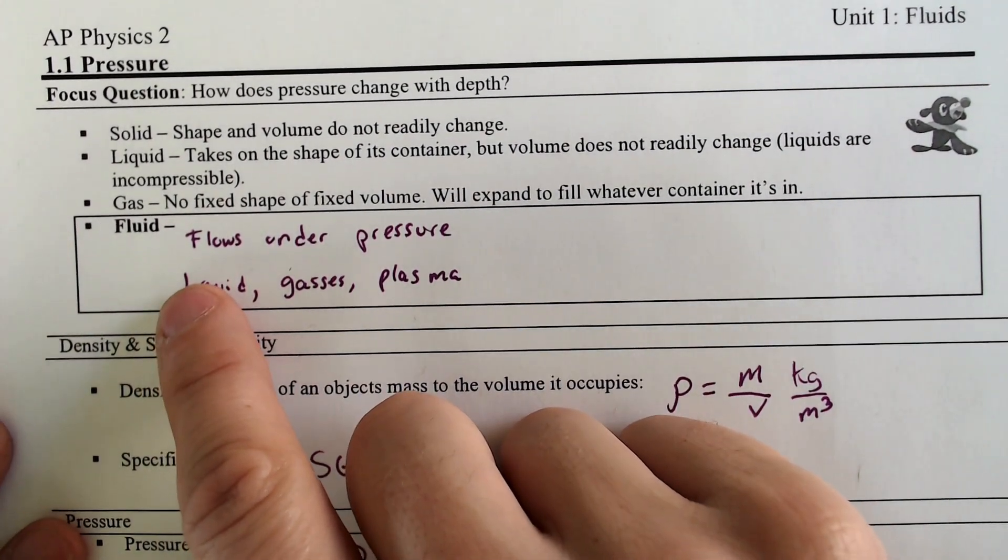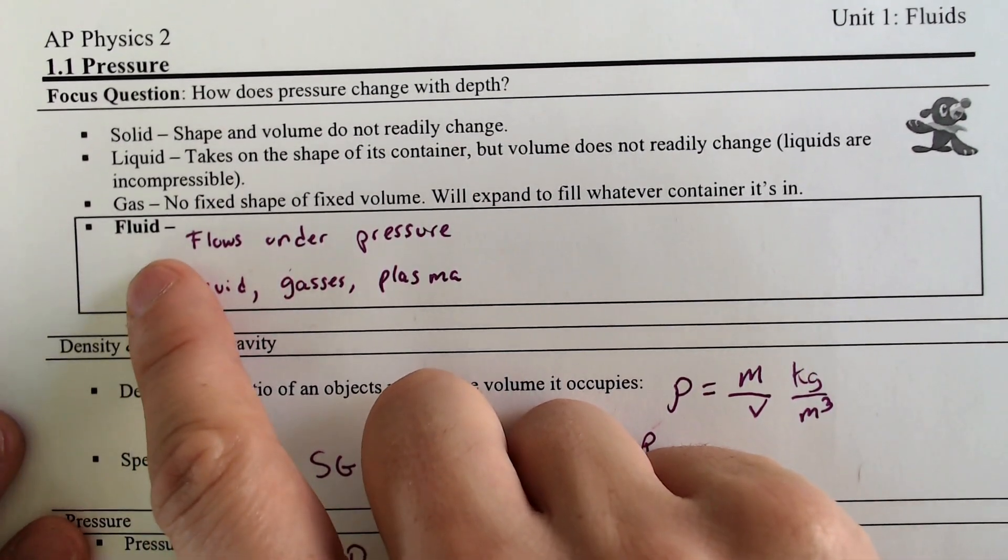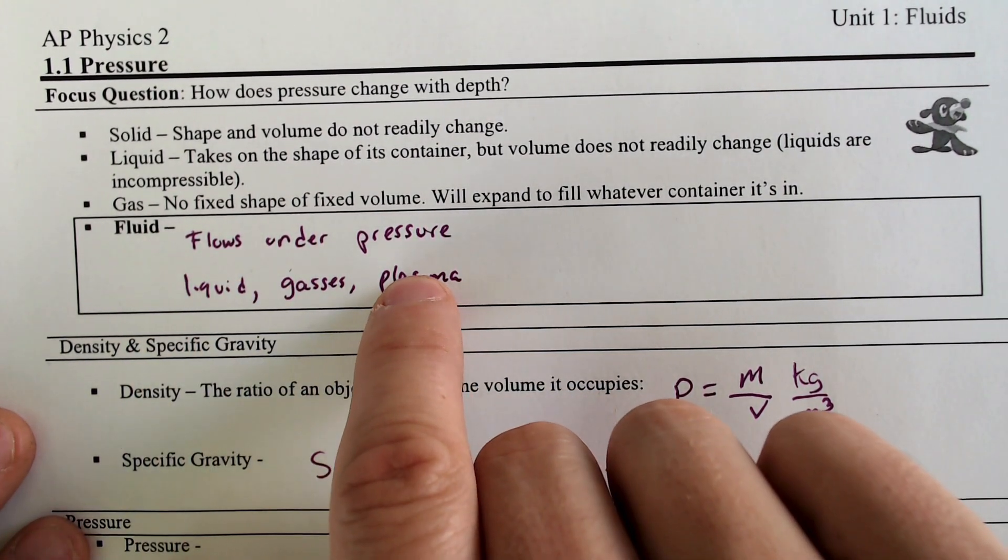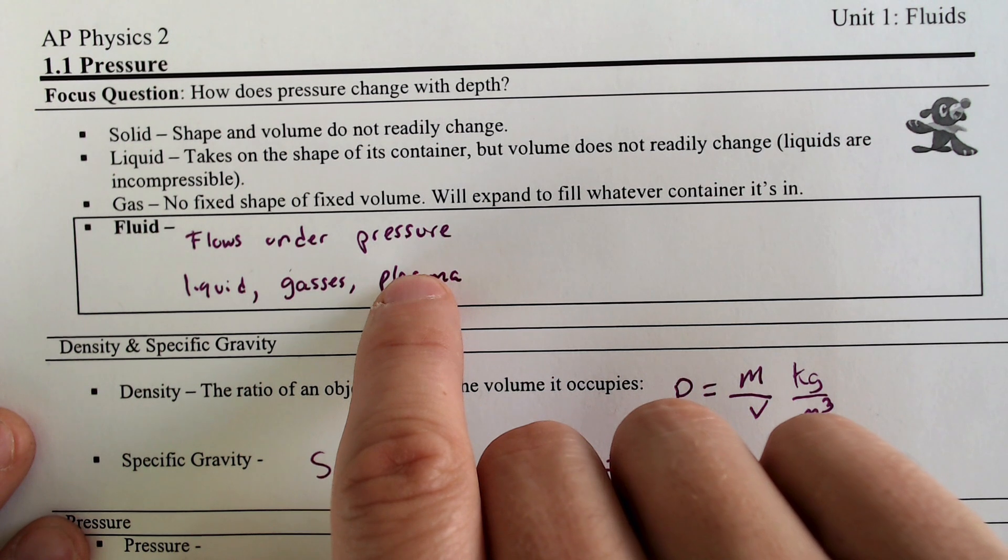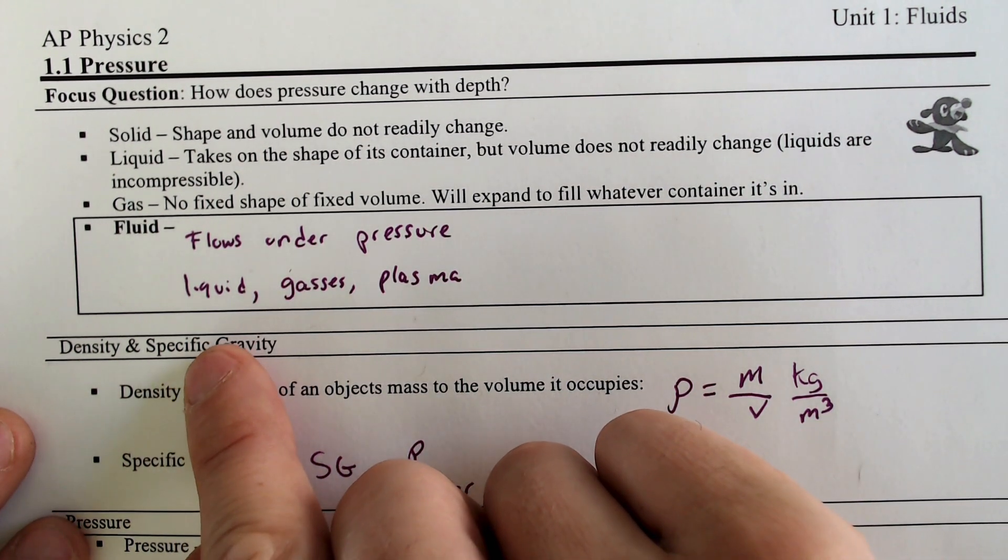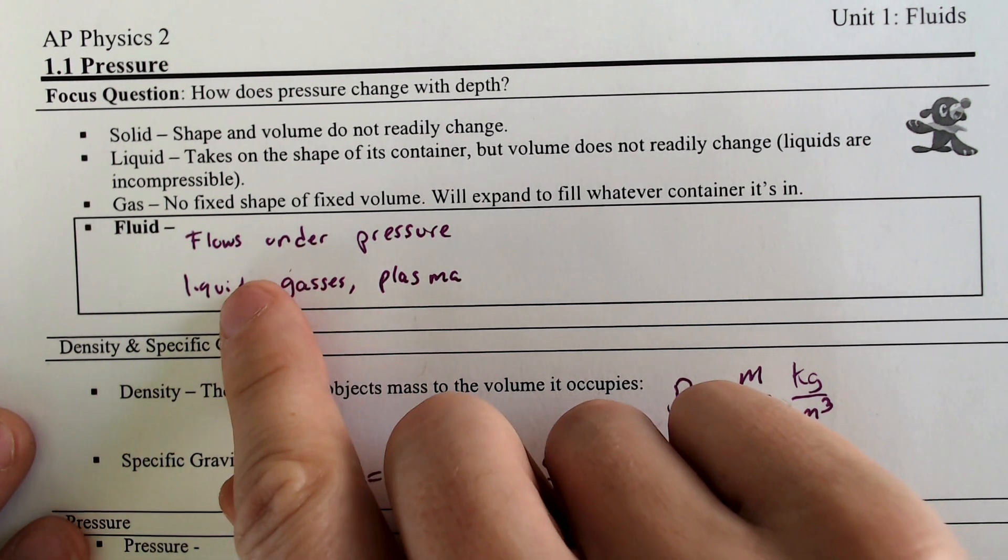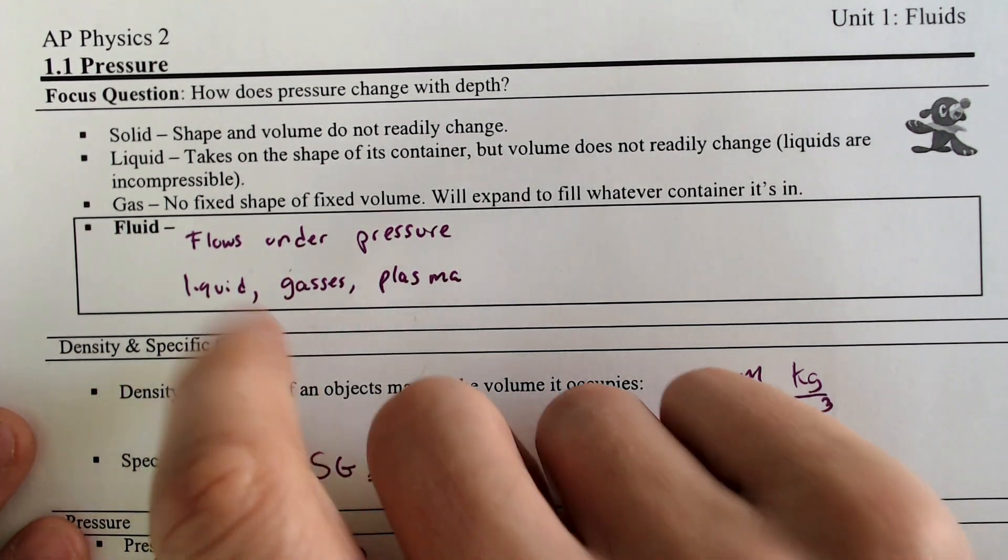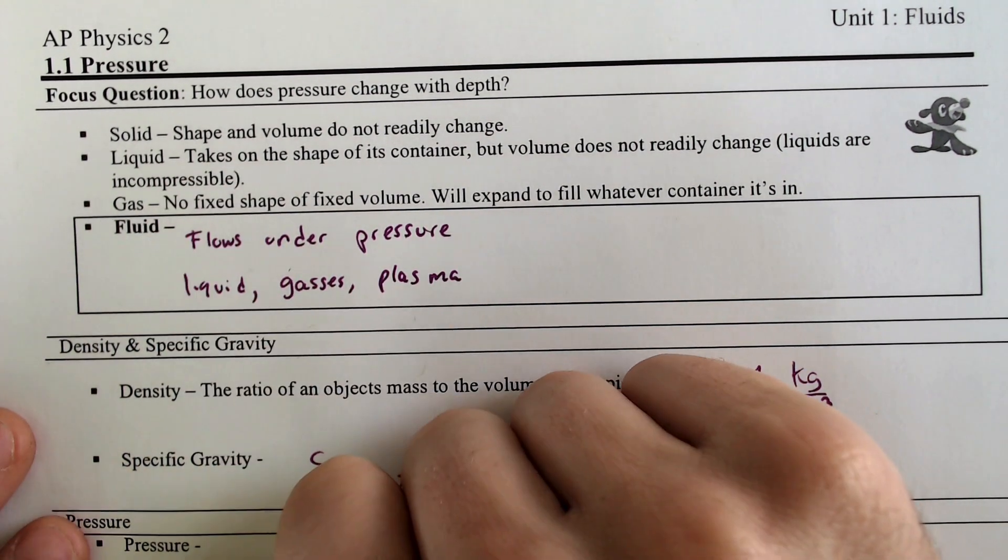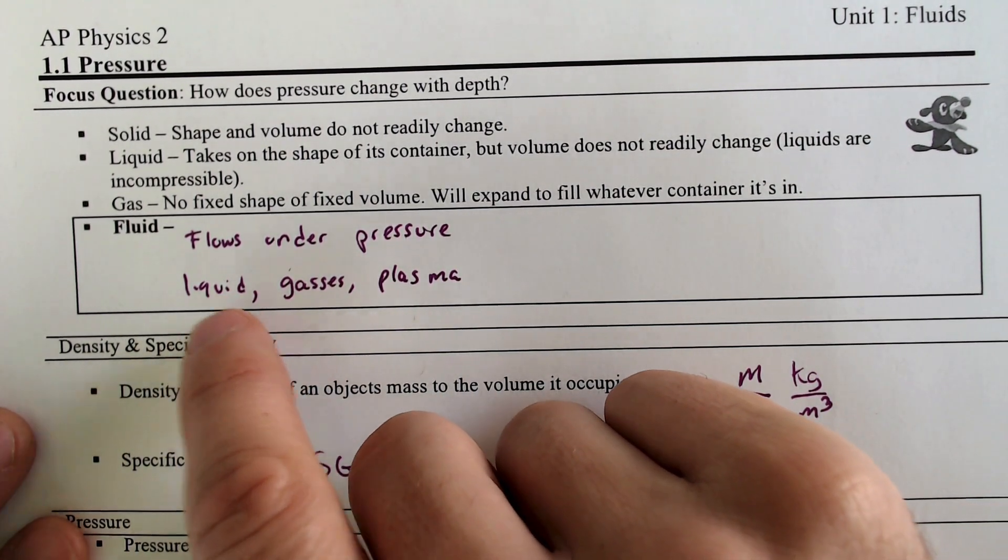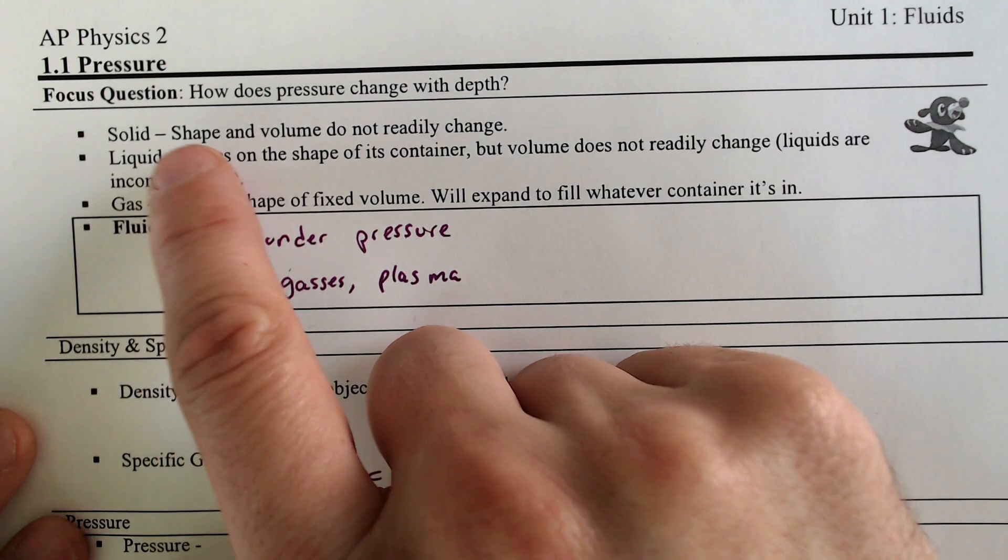A fluid is a combination of both of these things. A fluid flows under pressure and it can include a liquid and a gas as well as plasma. Because it can move, you can move liquids, you can move gases, and you can apparently move plasma. So we're going to focus on liquids mostly.